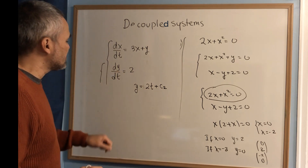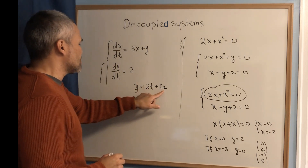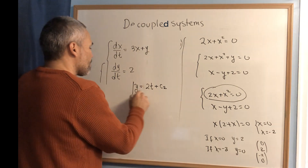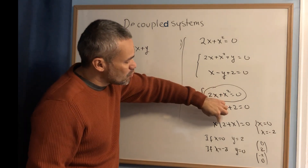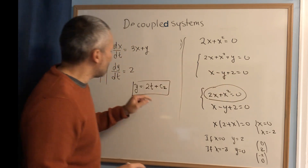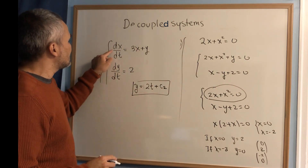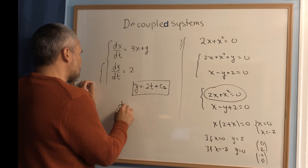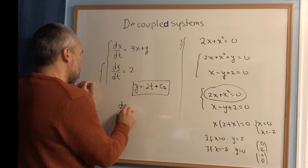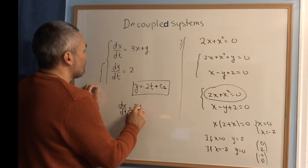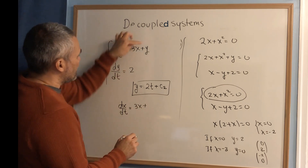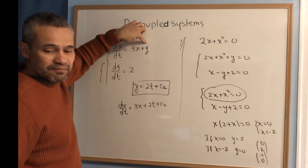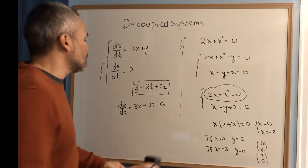Solving dy/dt equals 2, we get y equals 2t plus a constant, which we call c2. I'm calling it c2 because there will be two constants involved — c2 for y and c1 for x. Once we find that solution, we replace it into the other equation, ending up with dx/dt equals 3x plus (2t plus c2).